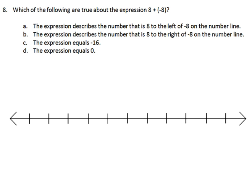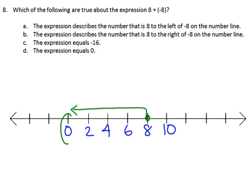Problem 8: which of the following are true about 8 plus negative 8? On a number line, we start at positive 8 and move left until we get to 0. So the expression equals 0. Looking at the answer choices, one says the expression describes the number that is 8 to the left of negative 8, and another says 8 to the right of negative 8. Moving 8 to the right of negative 8 also lands on 0, so both of those statements equal 0 and are both true.